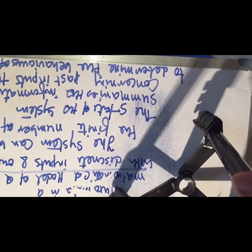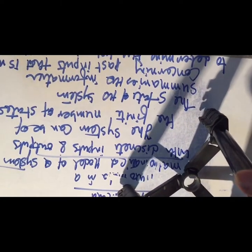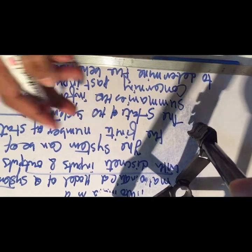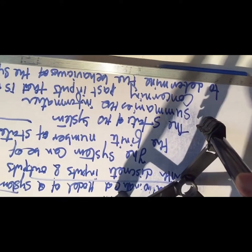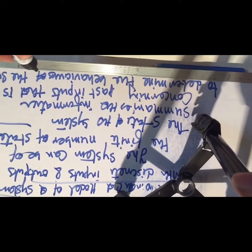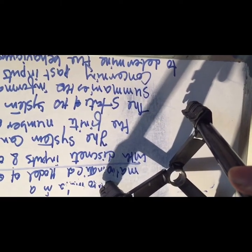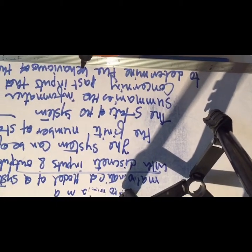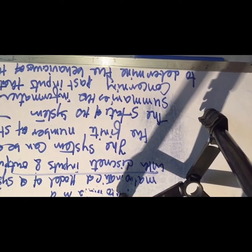So, automata is a mathematical model of a system with inputs and outputs. The system can have a finite number of states, and the states summarize information concerning past inputs needed to determine the behavior of the system depending on subsequent inputs.